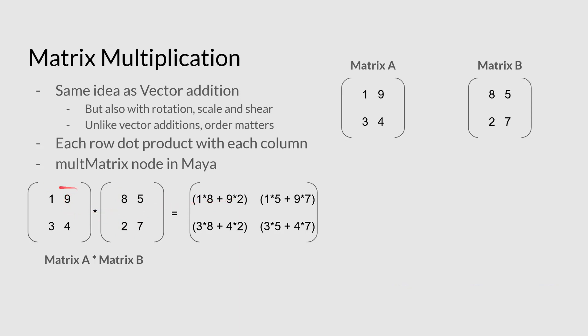And then we have to do that against the next column as well. So it'll be one, five, one, five, nine, seven, nine, seven. And then we do the same thing for three, eight, four, two, three, eight, four, two. And then you have to do three, five, four, seven, three, five, four, seven.